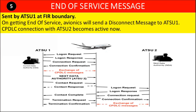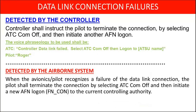Data link communication failure: when the controller recognizes a failure of the data link connection, the controller shall instruct the pilot to terminate the connection by selecting ATC-COM-OFF and then initiate another AFN logon. When the avionics or pilot recognizes a failure of the data link connection, the pilot shall terminate the connection by selecting ATC-COM-OFF and then initiate a new AFN logon to the current controlling authority.